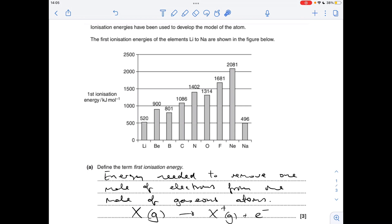For part A, we've got to give the definition for first ionisation energy. That's the energy needed to remove one mole of electrons from one mole of gaseous atoms, and we can always back that up with this equation.